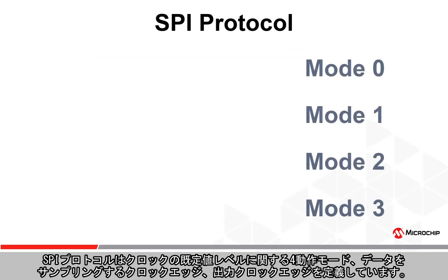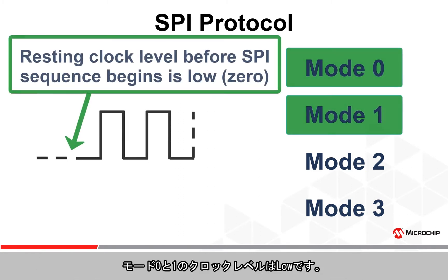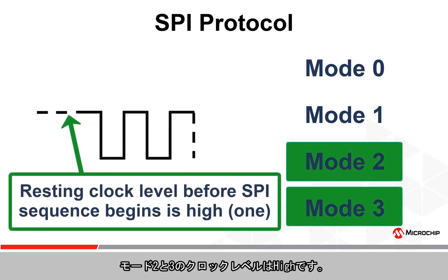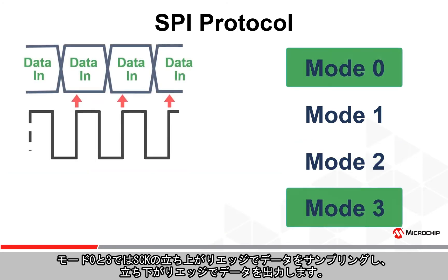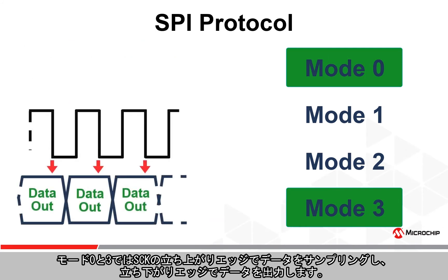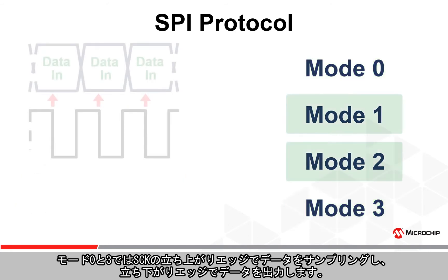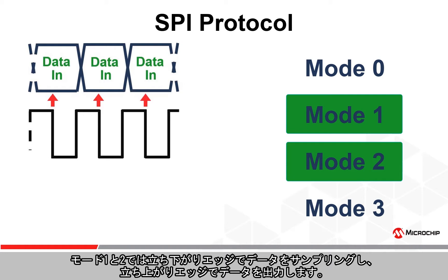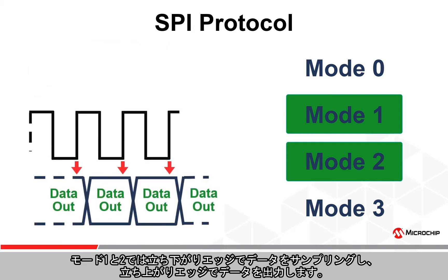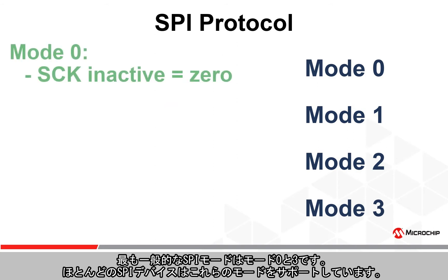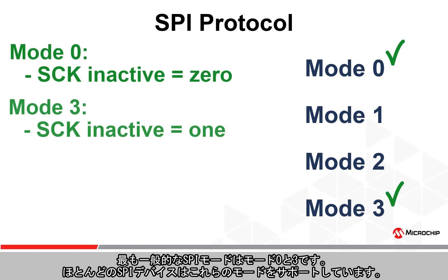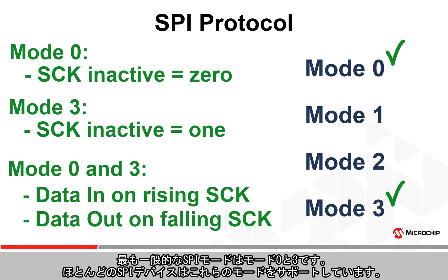SPI protocol defines four modes of operation related to the clock default level and which clock edges data is sampled on and driven out on. The clock default level for mode 0 and mode 1 is low, and for mode 2 and mode 3 it is high. Mode 0 and mode 3 sample data on the rising SCK edges and drive data out on the falling SCK edges, whereas for mode 1 and mode 2, data is sampled on the falling edges and driven out on the rising edges. By far the most common SPI modes are mode 0 and mode 3, since most SPI devices honor these two modes.